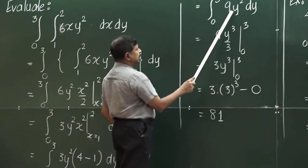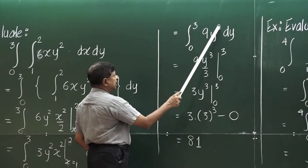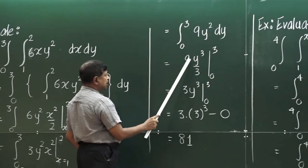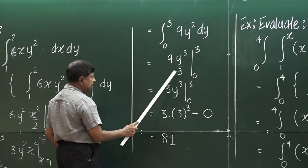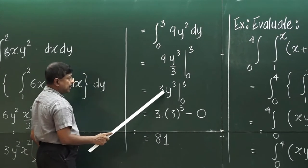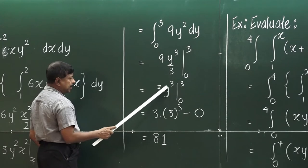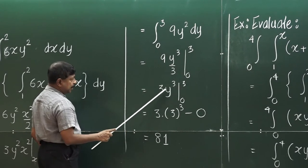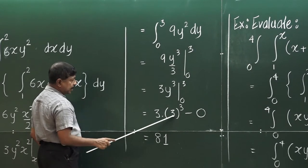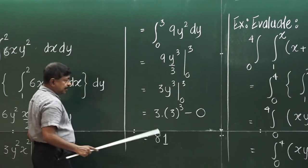Then it is a simple integral. You integrate y² to get y³/3, so 9 times y³/3. You will end up with 3y³. Now plug in the limits — you get 3 times 3³ minus 0, which is 81.